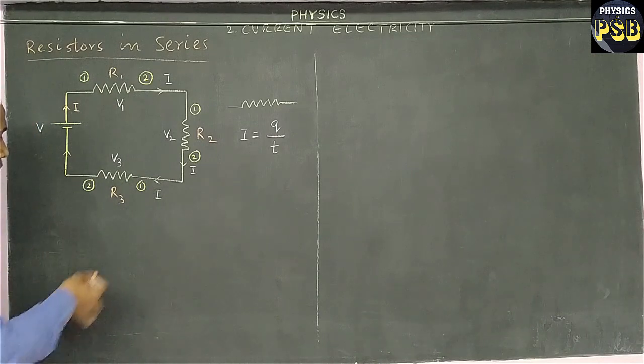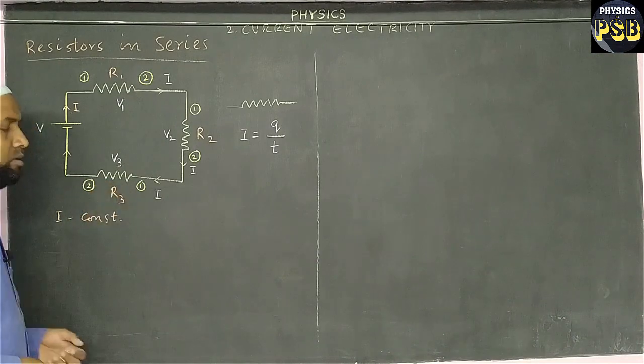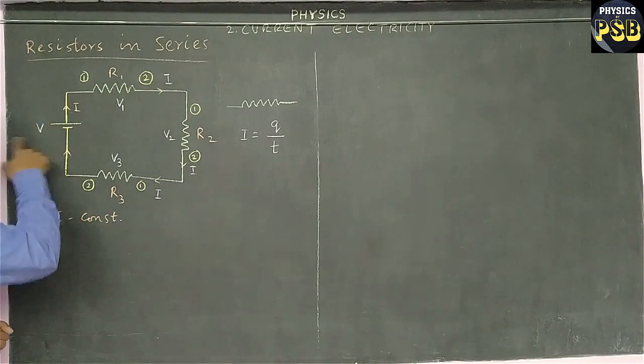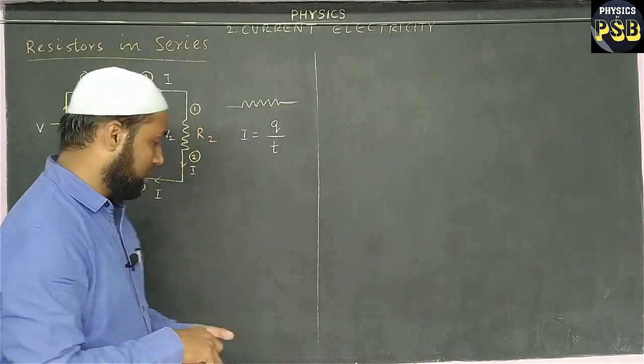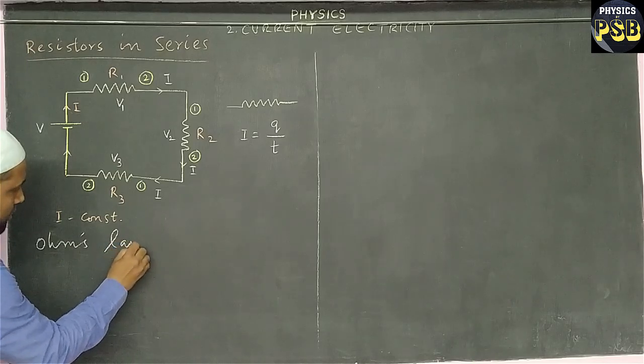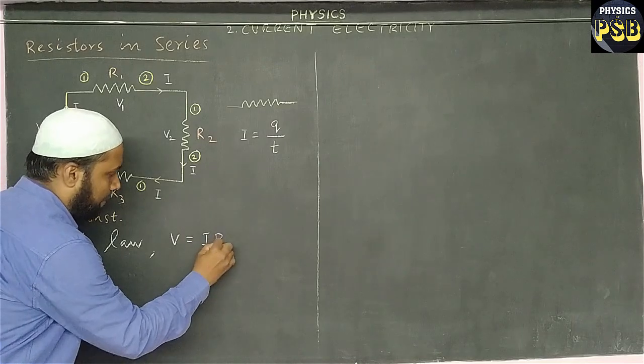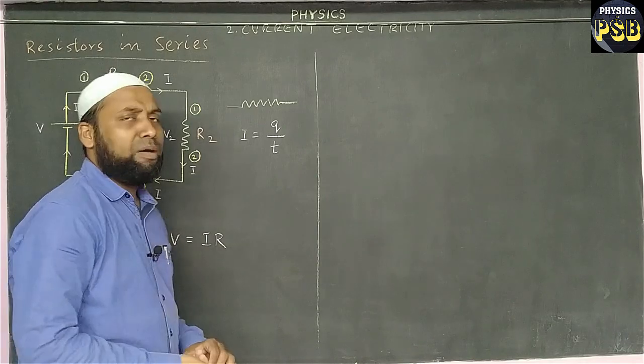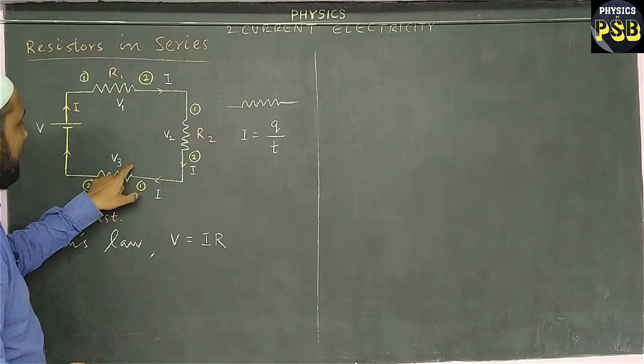So I is constant in the circuit. The second thing, potential difference in voltage can be obtained with the help of Ohm's law. Ohm's law says that V equals IR. With the help of Ohm's law we can obtain voltage across R1, R2, and R3.